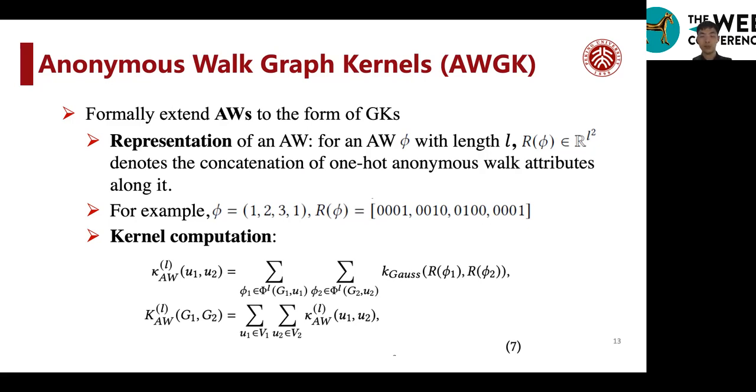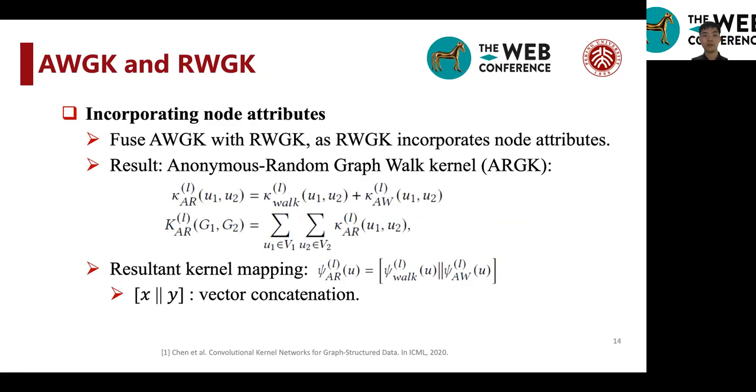And the kernel computation is similar to the random walk graph kernel, and the difference is that we replace random walk features with anonymous walk features.